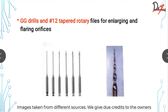GG drills and number 12 tapered rotary files are used for enlarging and flaring the orifice. Rotary orifice-opening files have a different cross-section and design compared to routine files such as sizes 10, 15, and 20; there are also number 12 and number 14 diameter files. GG drills come in different sizes and are used for flaring of the canal. The current concept discourages GG drills because they destroy a lot of tooth structure, but they are a must for post-and-core cases where proper shaping is needed.